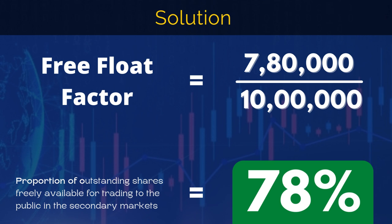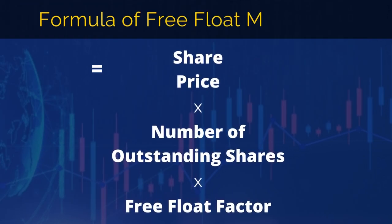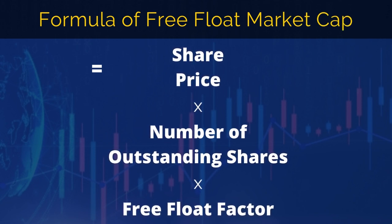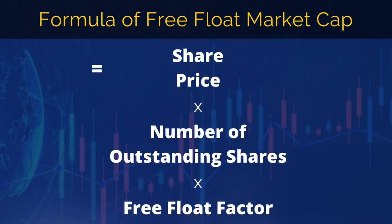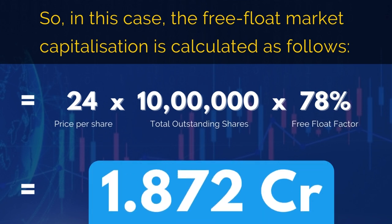Thus, 78% is the free float factor of this company, which represents the proportion of outstanding shares freely available for trading to the public in the secondary markets. Now, in order to calculate the market cap, the formula is: share price multiplied by number of outstanding shares multiplied by free float factor. So in our case, the free float market capitalization is: a market price per share of rupees 24, multiplied by the total number of outstanding shares of 10 lakhs, multiplied by a free float of 78%, giving us a free float adjusted market cap of rupees 1.872 crores.